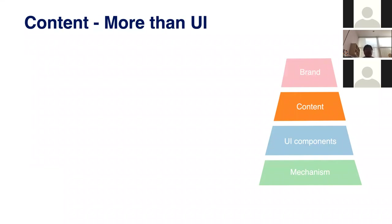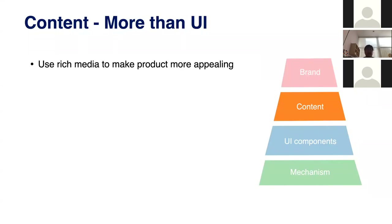The second part is content. Content is more than just UI components — icons, buttons, layouts, colors — it's also how we write text descriptions for products. Recently, using rich media to make products more appealing has become a trend and can really drive conversion. With 4G and 5G, streaming media is easy now. Leveraging content richness is a key consideration to provide more appealing features to consumers.